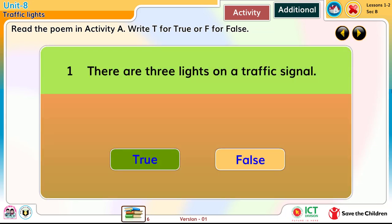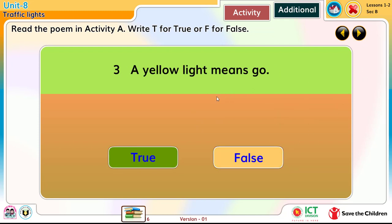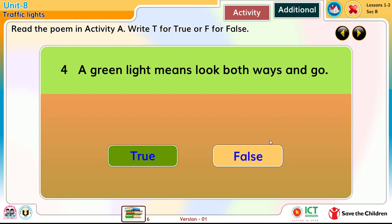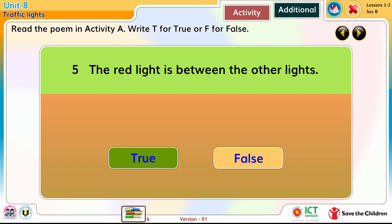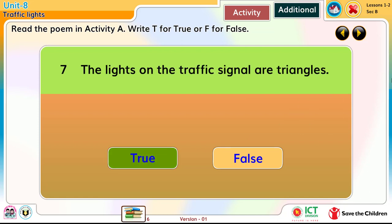1. There are three lights on a traffic signal. 2. The red light means slow down. 3. A yellow light means go. 4. A green light means both ways and go. 5. The red light is between the other lights. 6. The green light is under the yellow light. 7. The lights on the traffic signal are triangles.